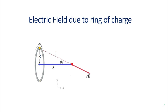We have a thin ring of radius R that holds a total charge Q, and this charge is positive — we call it plus Q. The distribution is uniform. The objective is to find the electric field at point M from an axis that passes from the center of the ring. I call it X.